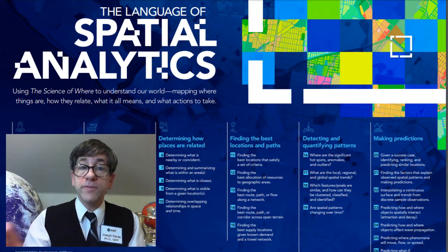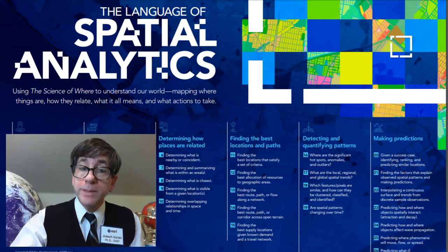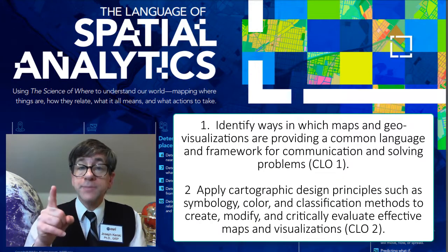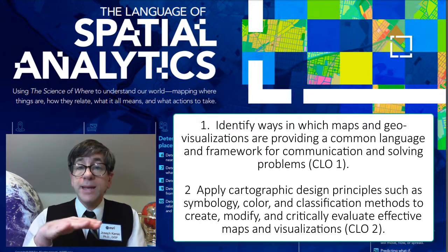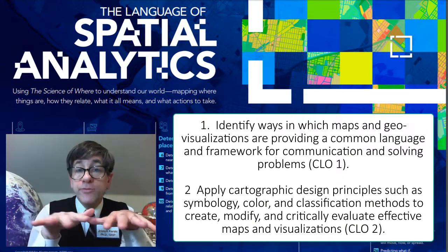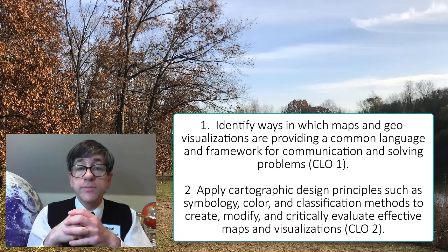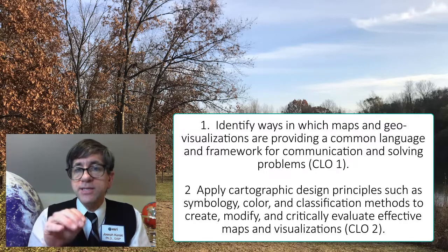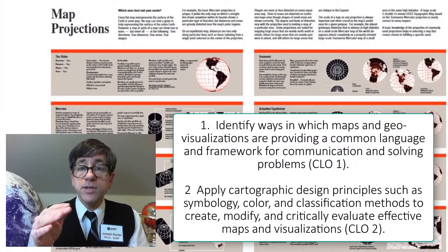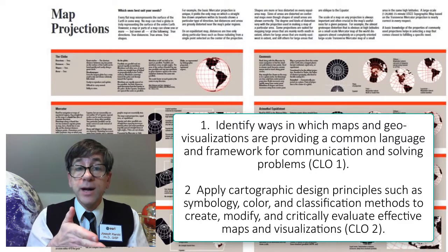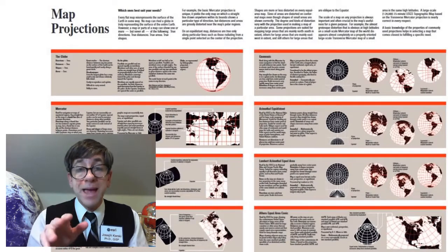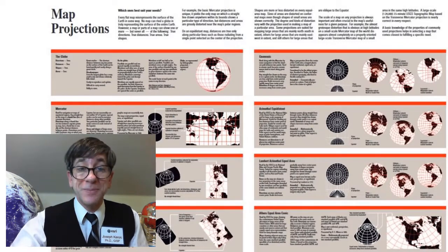Upon completion of this course, you will be able to do six things. One: identify ways in which maps and geo-visualizations are providing a common language and framework for communications and for solving problems. Two: apply cartographic design principles such as symbology, color, and classification methods to create, modify, and critically evaluate effective maps and visualizations. And believe me, we will look at a lot of maps — and some maps that aren't so good as well.